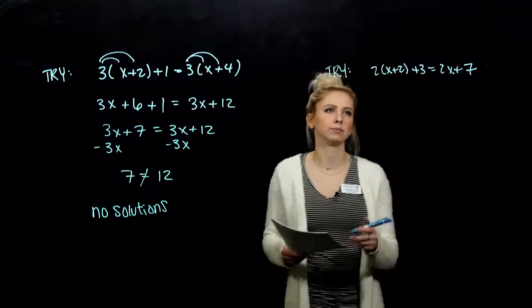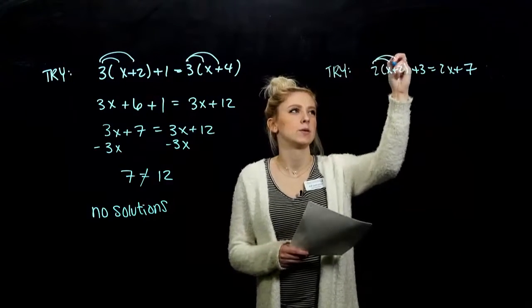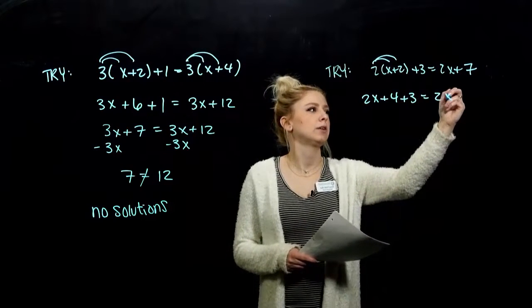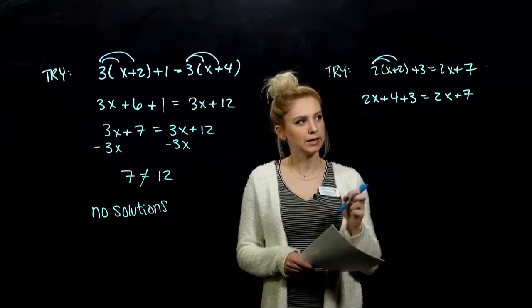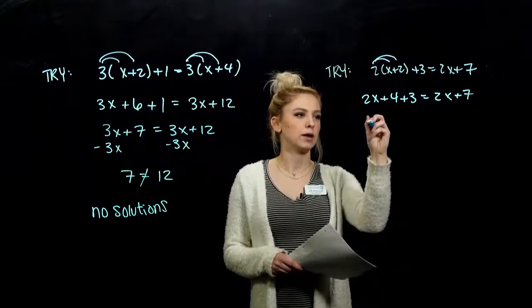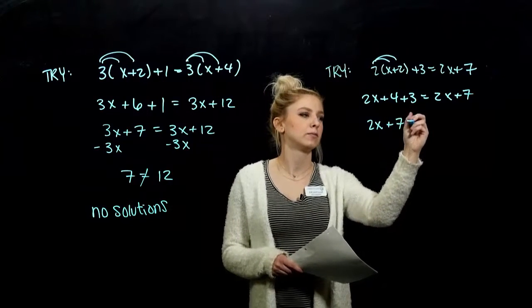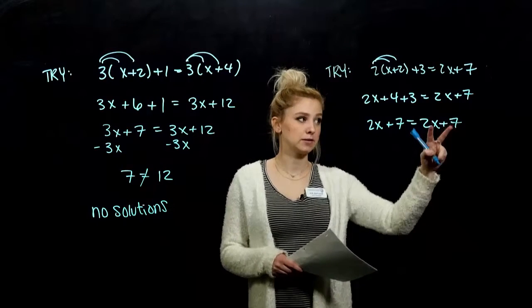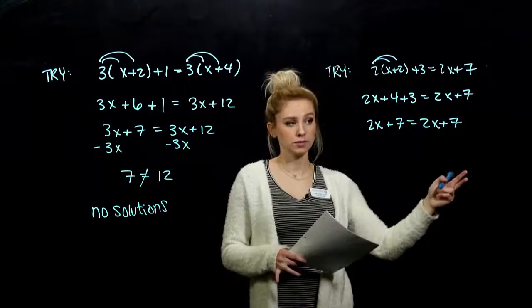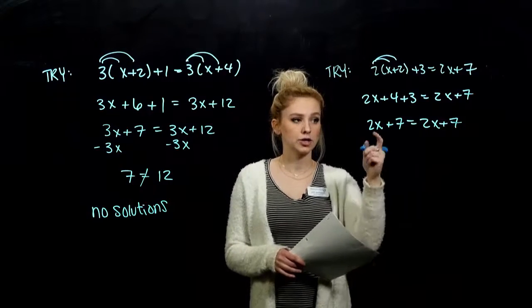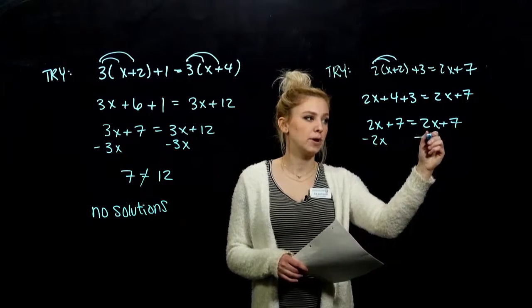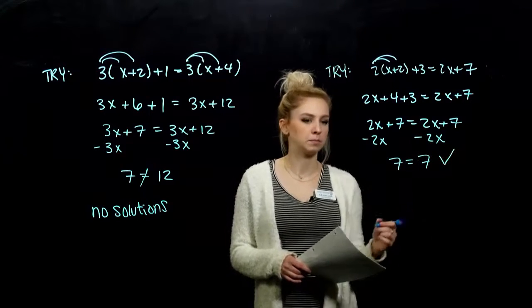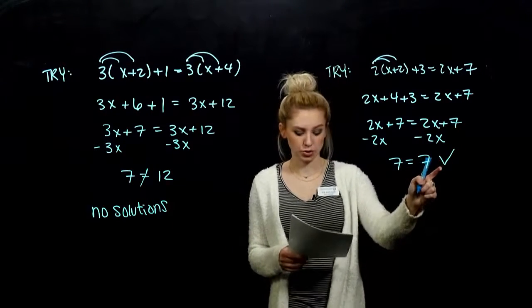And, the second one, what happened there? Again, we still have parentheses. We need to distribute and get rid of those. And, once we do that, we'll combine our like terms. 4 and 3 together gives me 7. What do you notice? Exactly the same on the left. Exactly the same on the right. If you don't see it, just keep moving along like you're trying to isolate. I'm going to move 2x to this side. I'm left with 7 equals 7. Something that's always true.